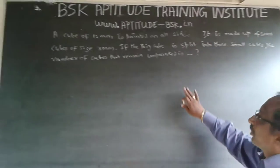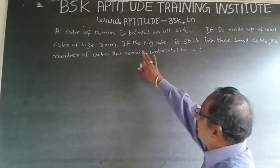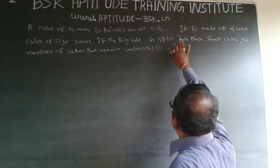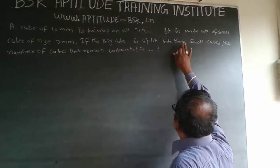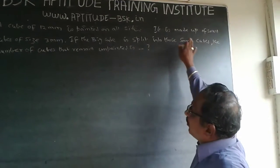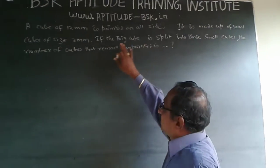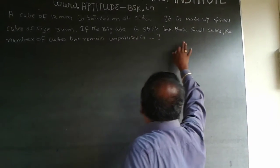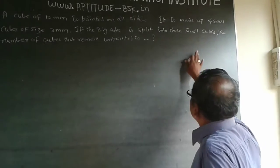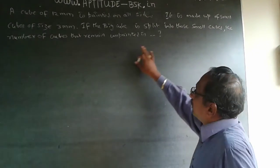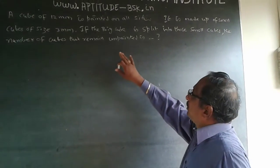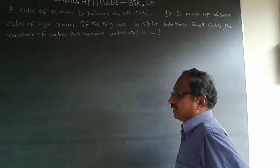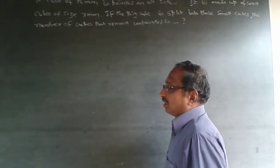The question is: a cube of 12mm is painted on all sides. It is made up of small cubes of size 3mm. If the big cube is split into those small cubes, the number of cubes that remain unpainted is... This is a cube problem.